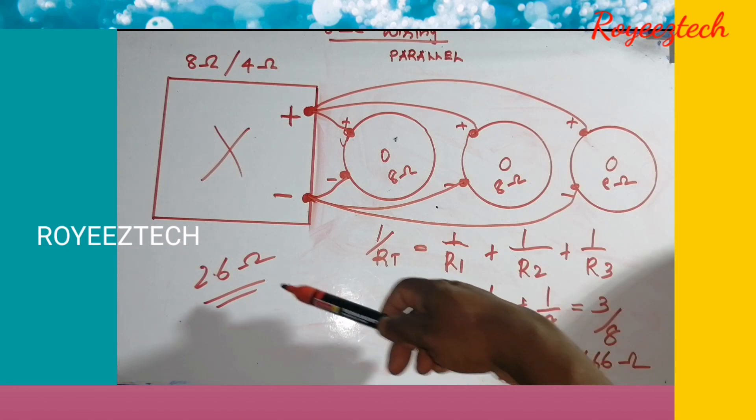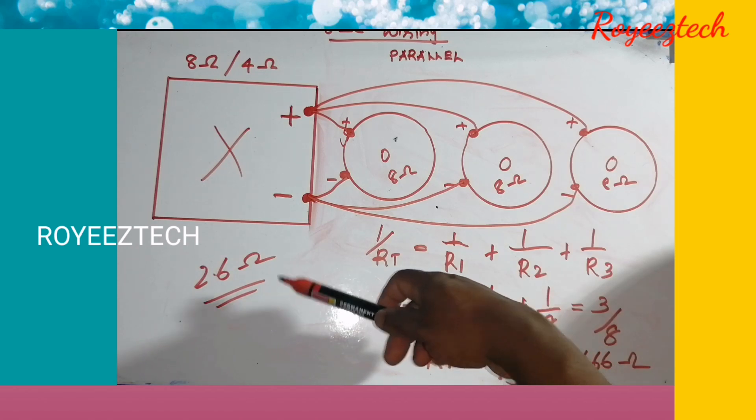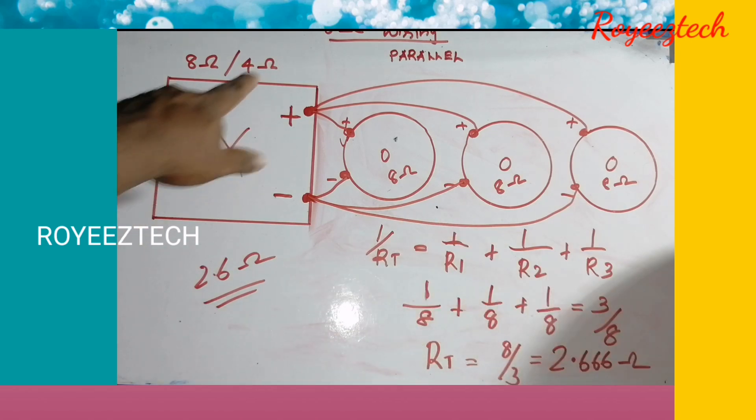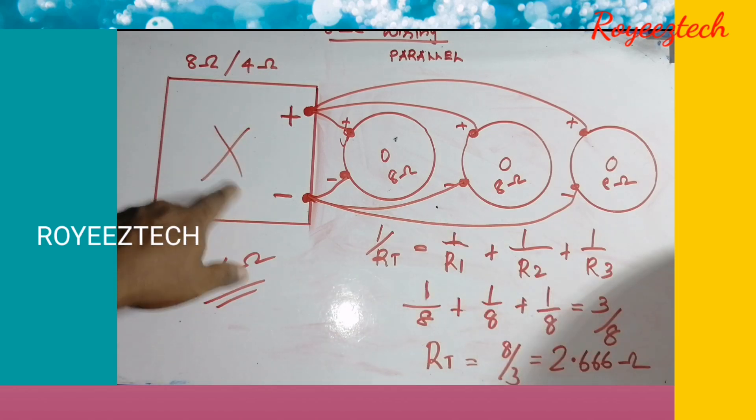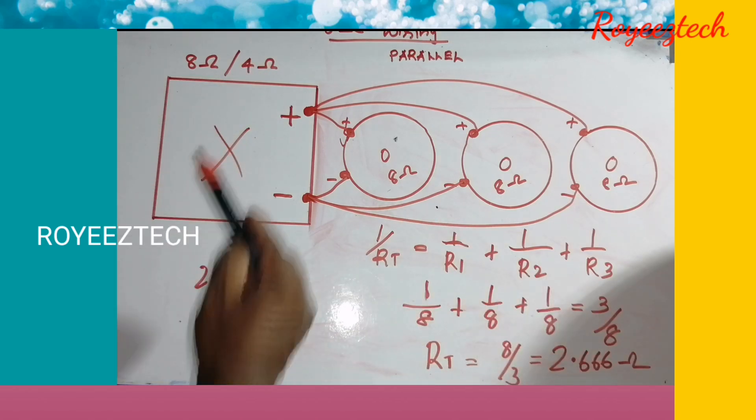At 2.66 ohms, the load is very low. This is below the safe operating range of the amplifier.